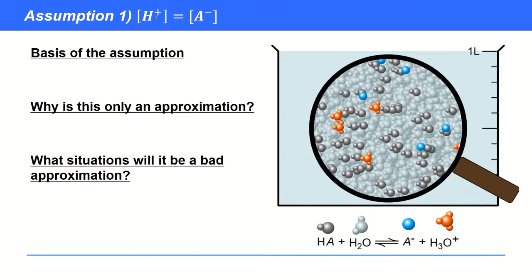So the basis of the first assumption, which is that the H+ concentration is the same as the A- concentration, really just comes from the fact that one HA molecule dissociates to form one H3O+ ion (or one H+ ion) and one A-. So you can see it in the mole ratio in this dissociation equation. Every time one of these breaks up, you get one of those and one of those, just like a pen with a lid. Now why is this only an approximation then? It all seems so reasonable.